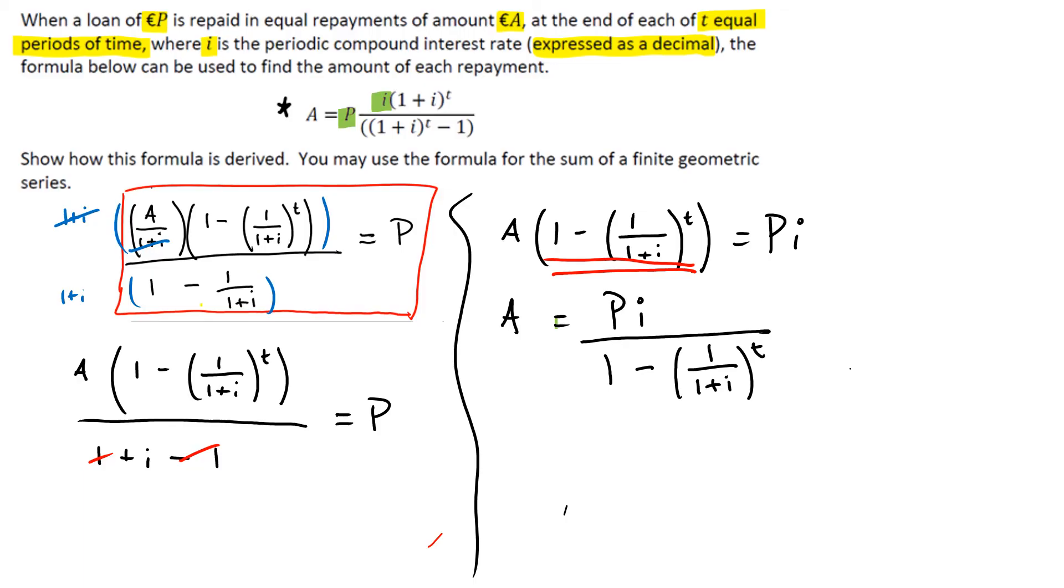So what we can do just to tidy this up a little bit is I'm going to leave the P I up the top. I'm going to break up this fraction and because 1 to the power of anything is going to be just 1.